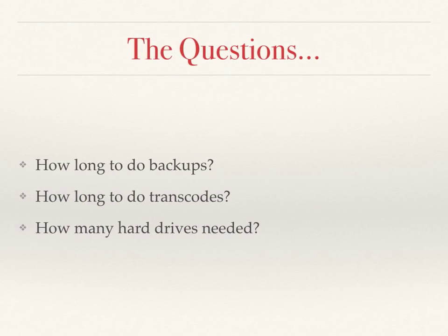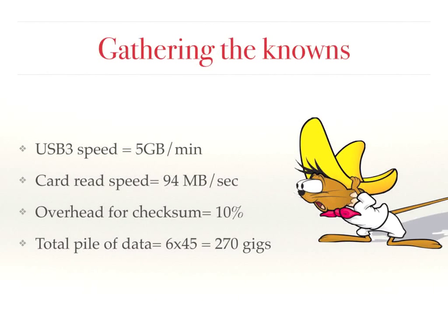Now some questions: how long to do the backups, how long to do the transcodes (and remember there's two of them), and how many hard drives are needed? First, let's gather the knowns. USB 3 speed for copying is roughly 5 gigabytes per second — that's pretty fast. But those SD cards, the fastest they can read is 94 megabytes per second. That should tell you something about our copy speeds right there.